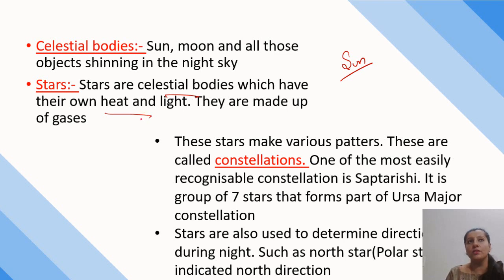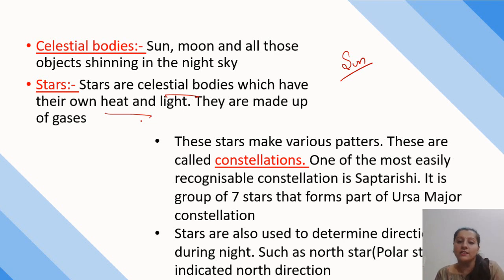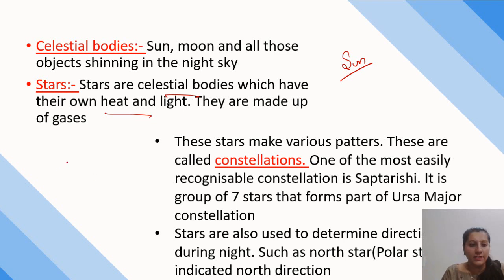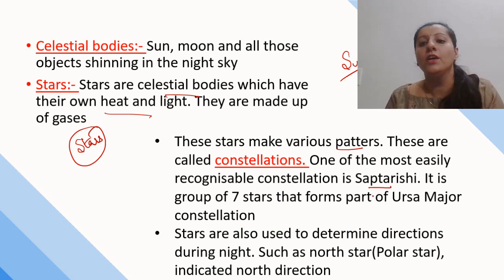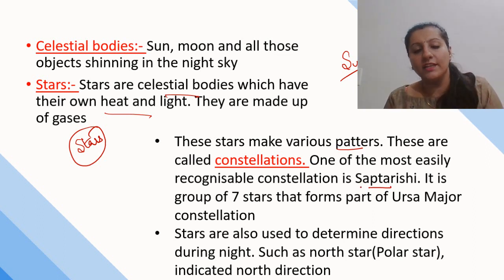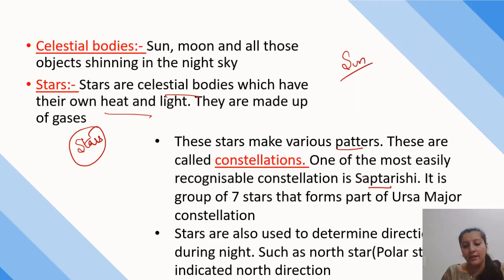When we talk about stars, constellations are arrangements of stars that make various patterns in the sky. These patterns are called constellations. For example, the seven stars forming a group are called Saptarishi. Even ancient people used constellations for navigation, such as the Pole Star indicating direction. This knowledge from older times is still relevant today.